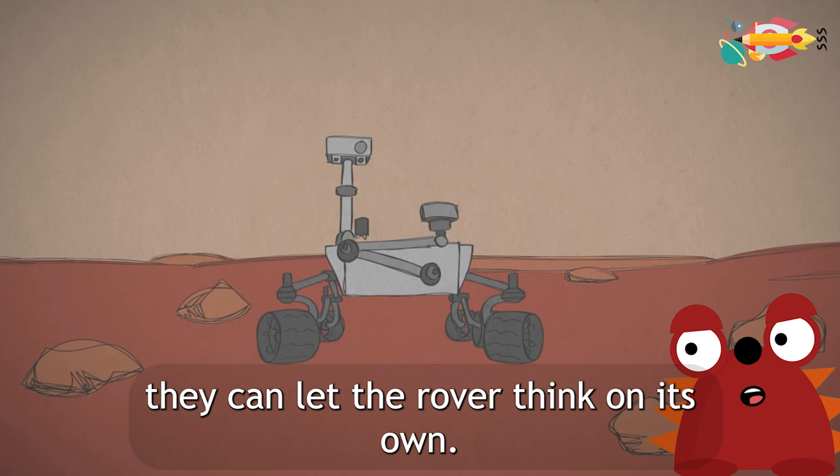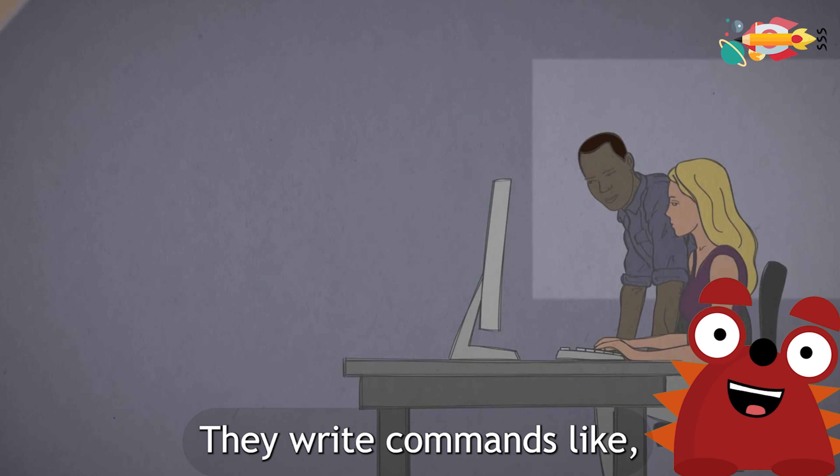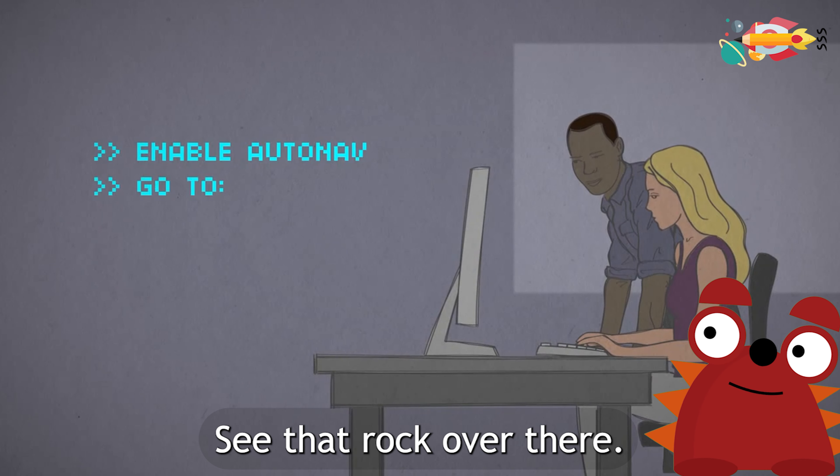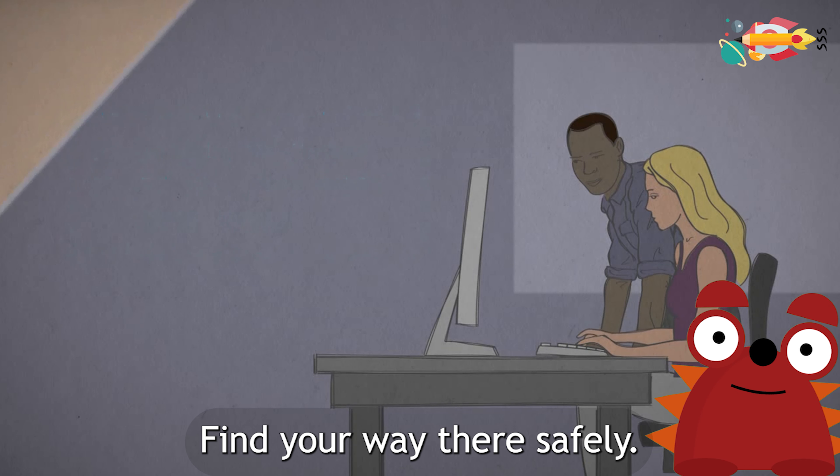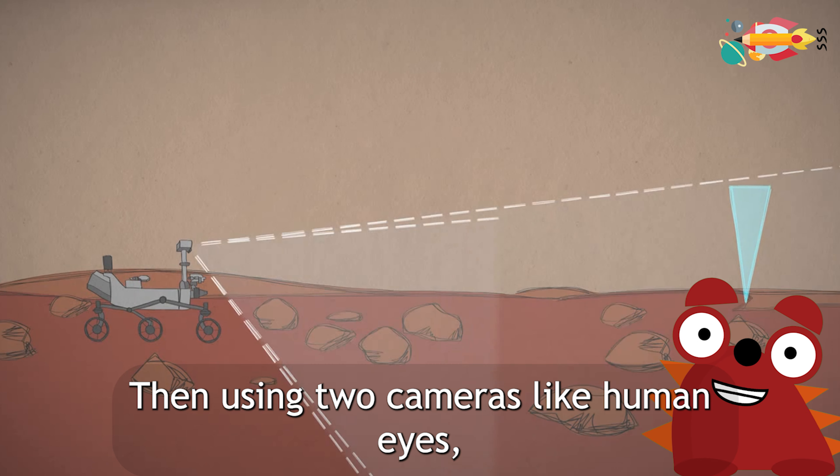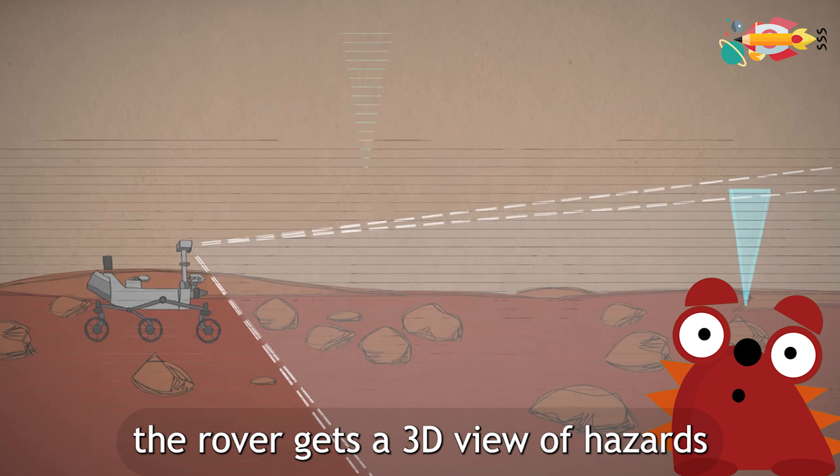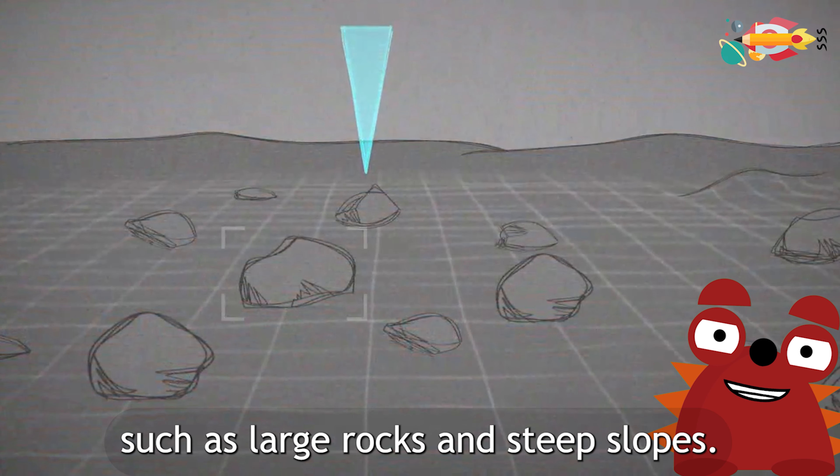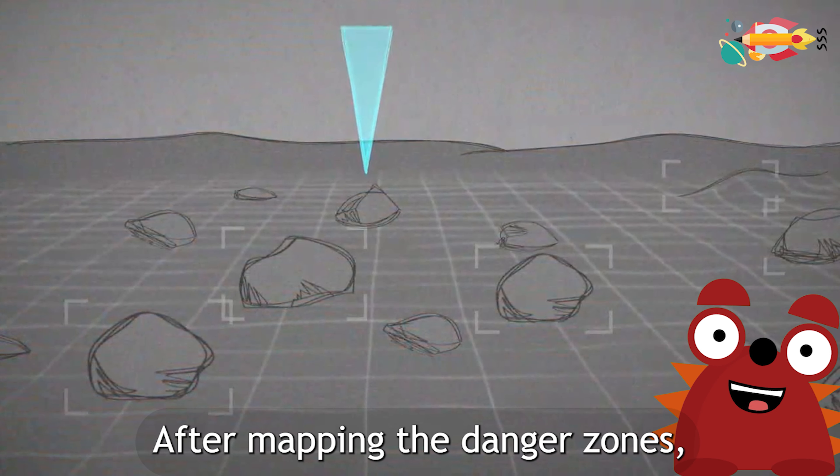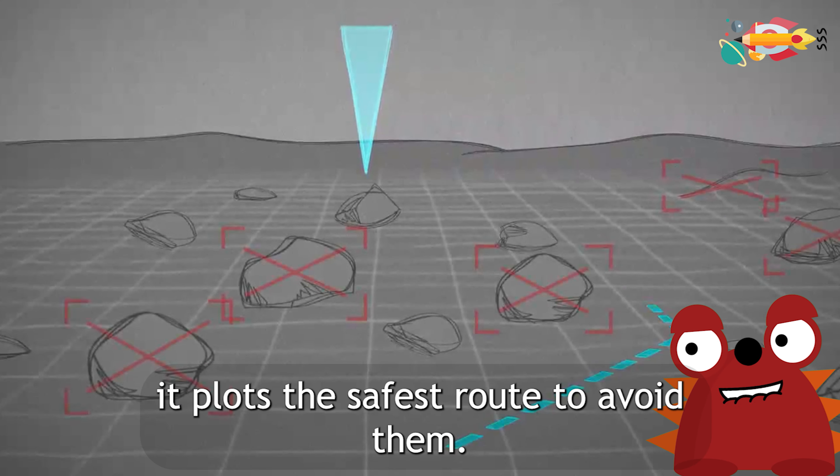Or if it looks safe, they can let the rover think on its own. They write commands like, see that rock over there? Find your way there safely. Then, using two cameras like human eyes, the rover gets a 3D view of hazards such as large rocks and steep slopes. After mapping the danger zones, it plots the safest route to avoid them.